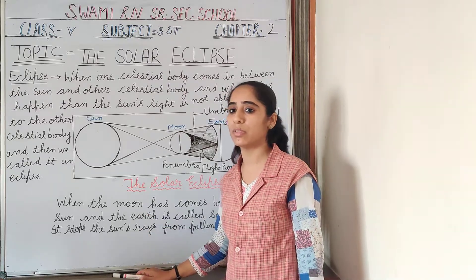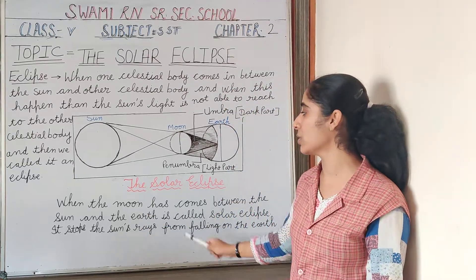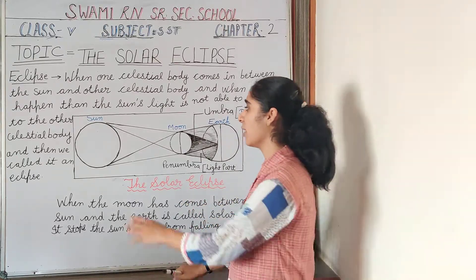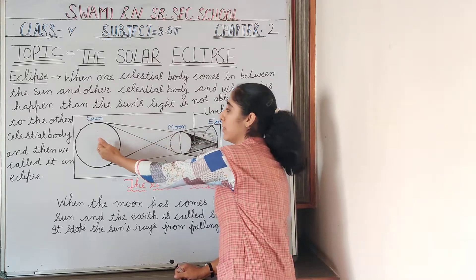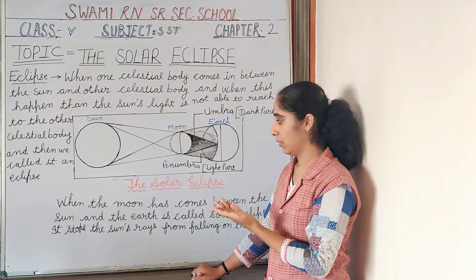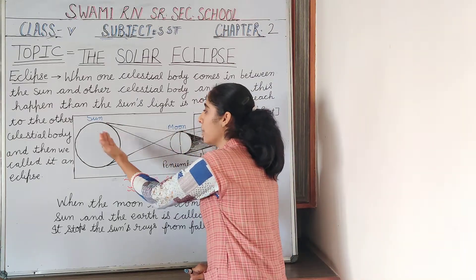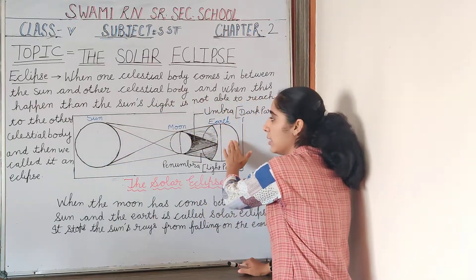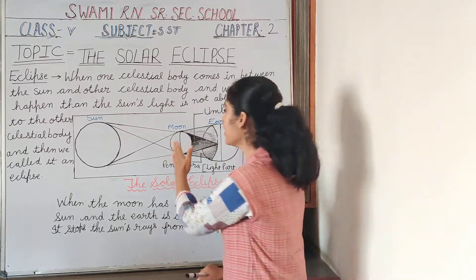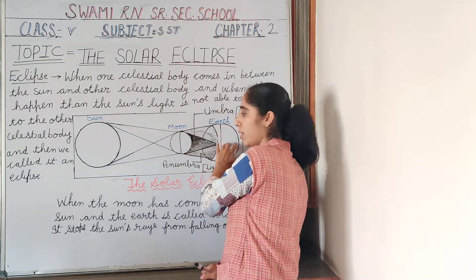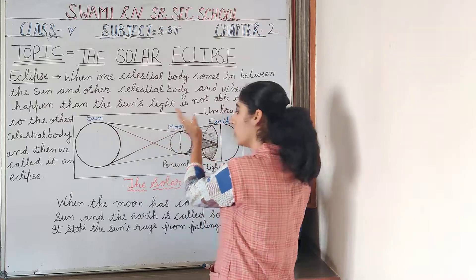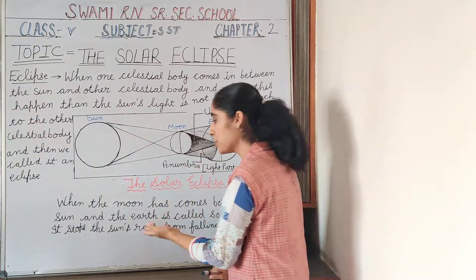Now we will understand about the solar eclipse. What is a solar eclipse? When the moon comes between the sun and the earth, then solar eclipse happens. The moon stops the sun rays from falling on the earth — then solar eclipse happens.